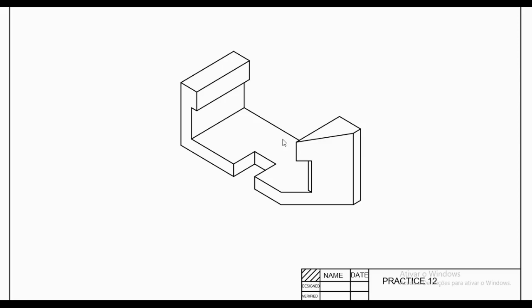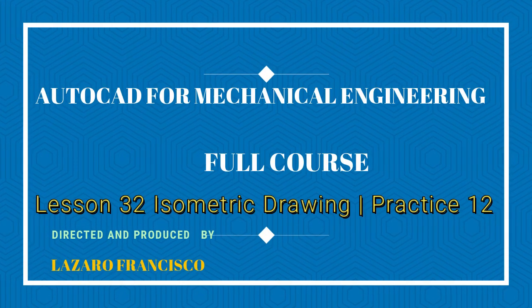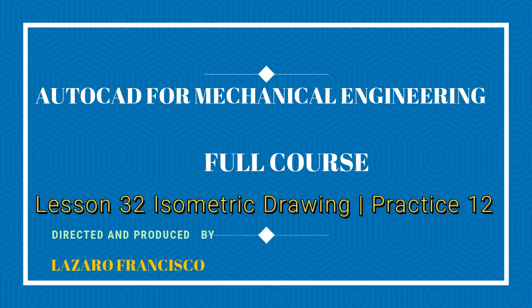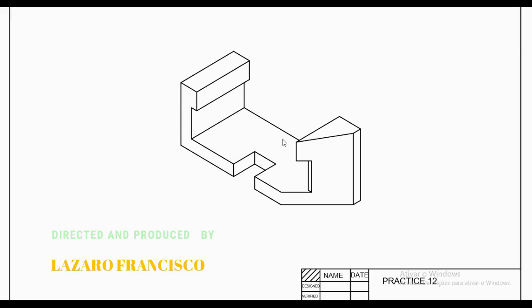Welcome back to this channel. This is AutoCAD for mechanical engineering, lesson number 32. This lesson will cover practice number 12 and we're still talking about isometric drawing.